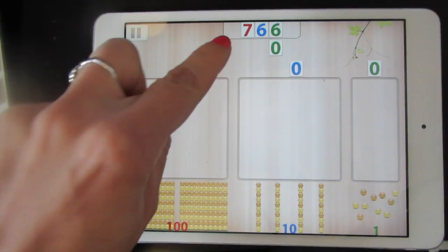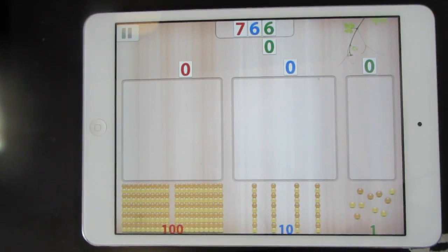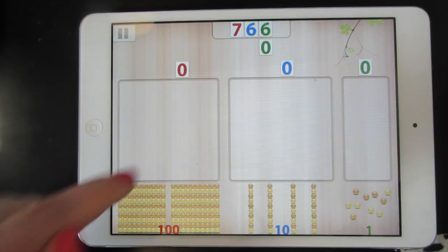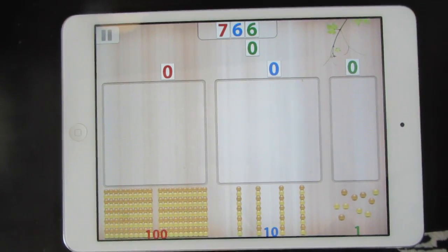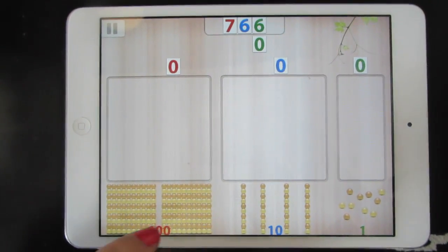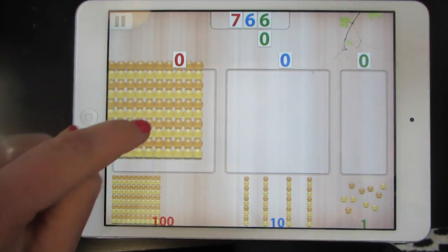Your job is to make the number you see up here using the place value blocks. First we'll make the number in the hundreds place. We'll drag seven hundreds to make 700.